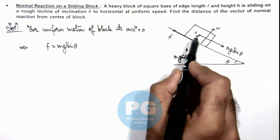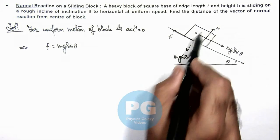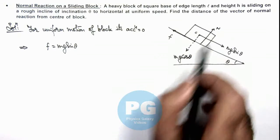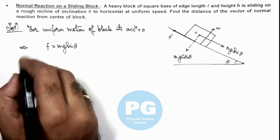Because if normal reaction passes through center, then torque due to normal reaction will also be zero and friction would be providing a torque which cannot be balanced. So here we can say.